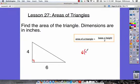So we get 6 times 4, and we're going to divide that by 2. 6 times 4 is 24. Divide by 2, half of 24 is 12. Our answer is 12 square inches, or inches to the second power.